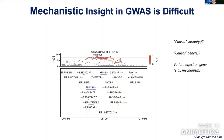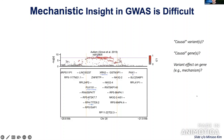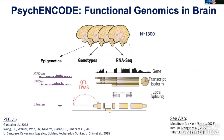For example, the top genome-wide significant locus in autism from the Grovidal 2019 paper is very challenging to interpret: given the pattern of linkage disequilibrium, it's hard to identify both the causal variants and the causal target gene, and even then understanding the mechanism through which the variant impacts the gene is still a large challenge.